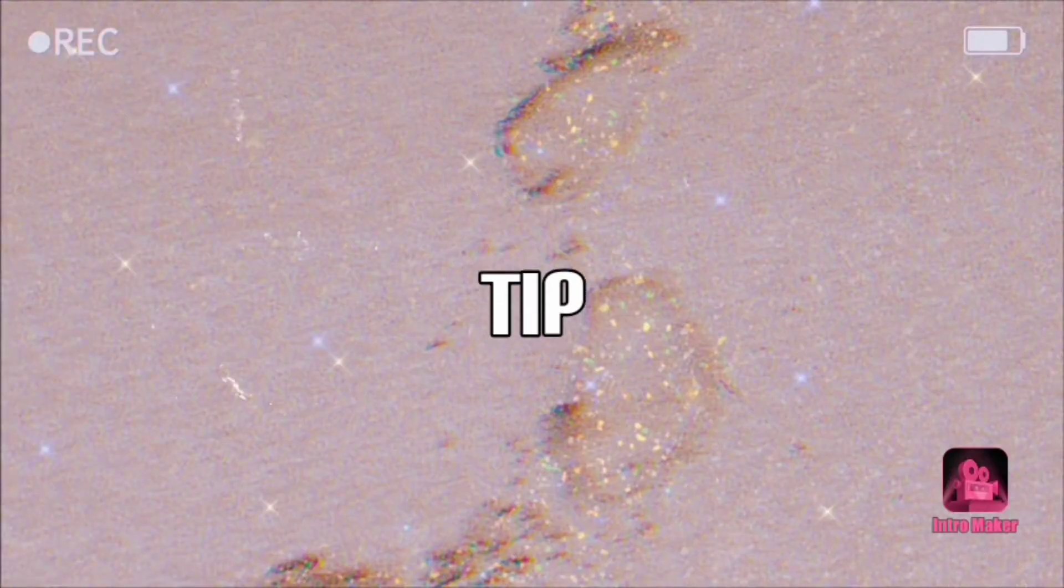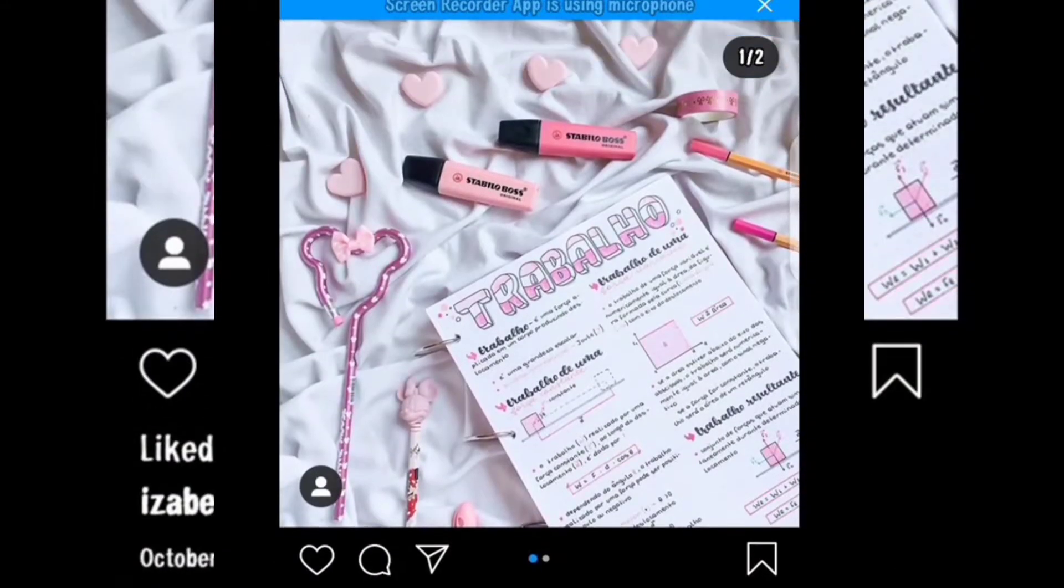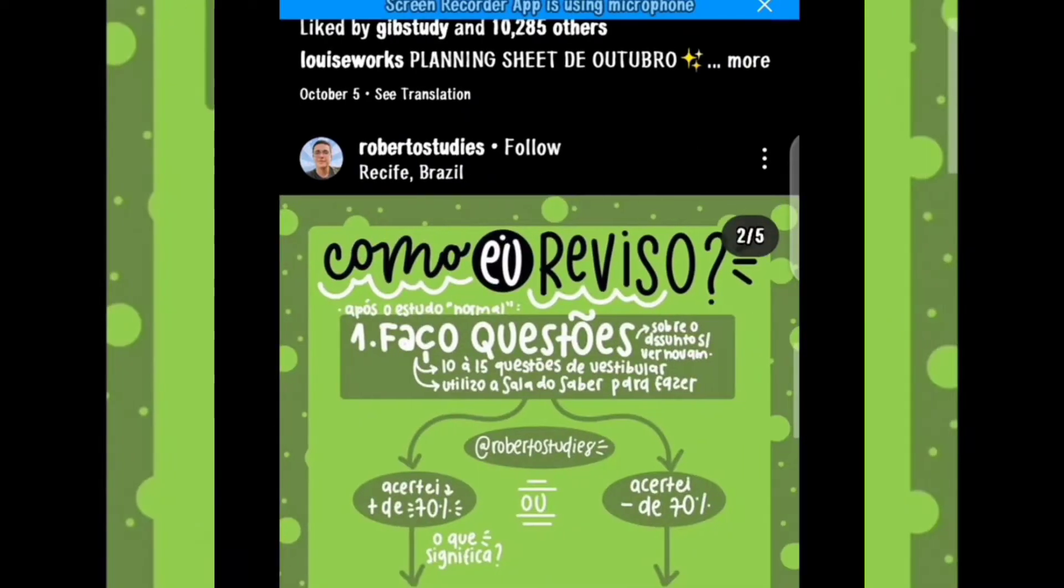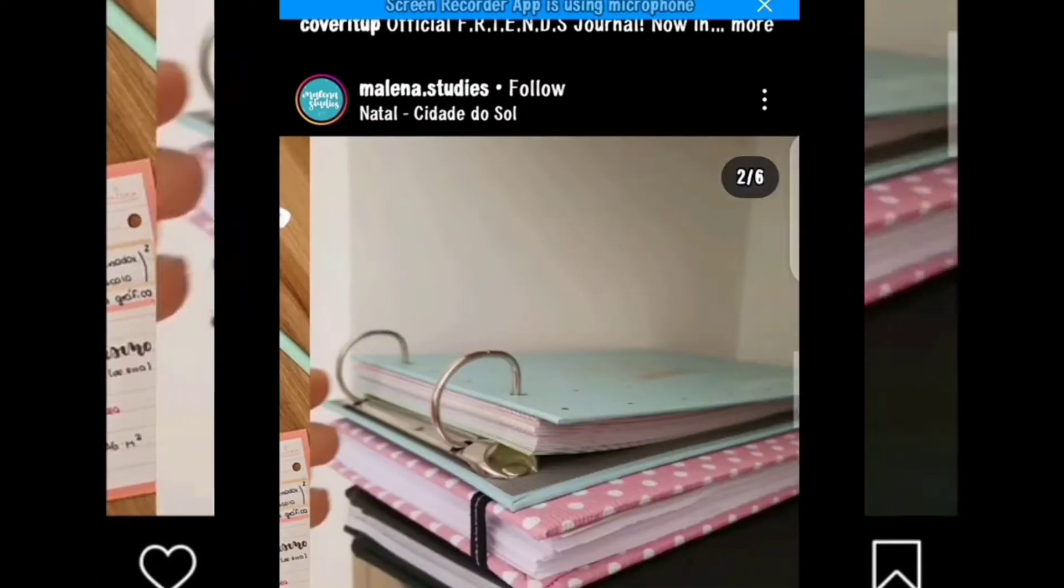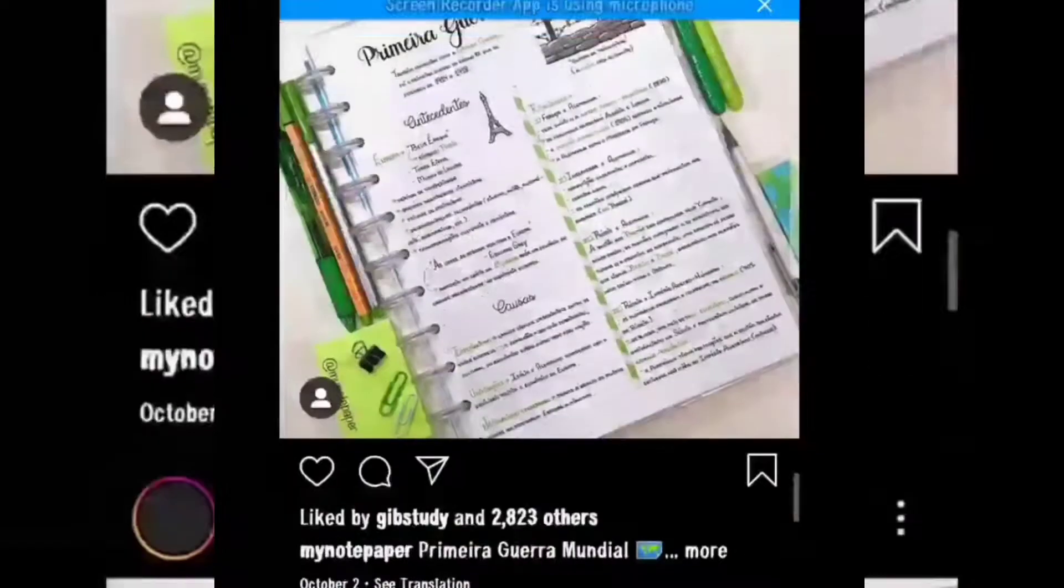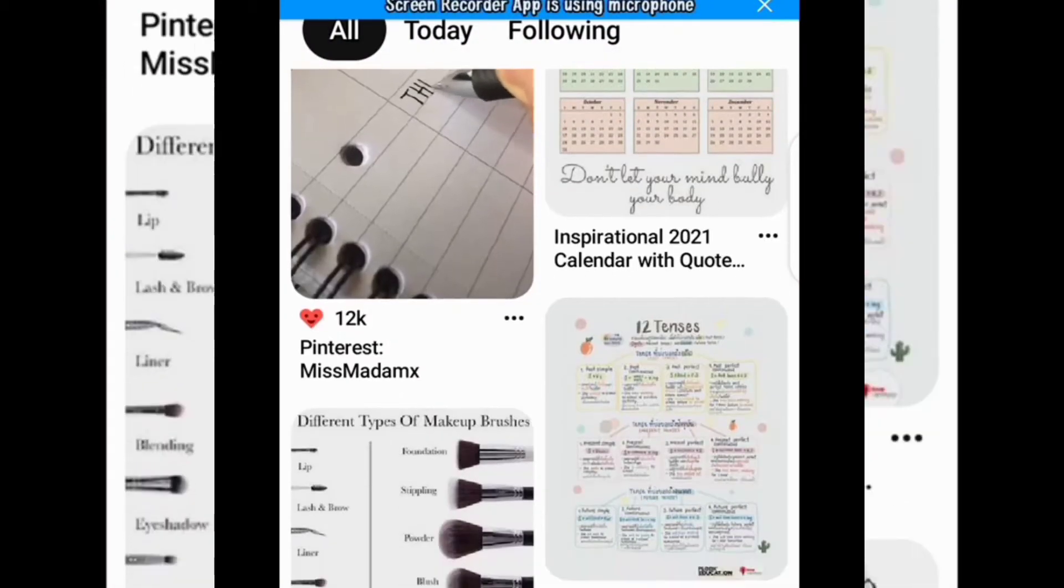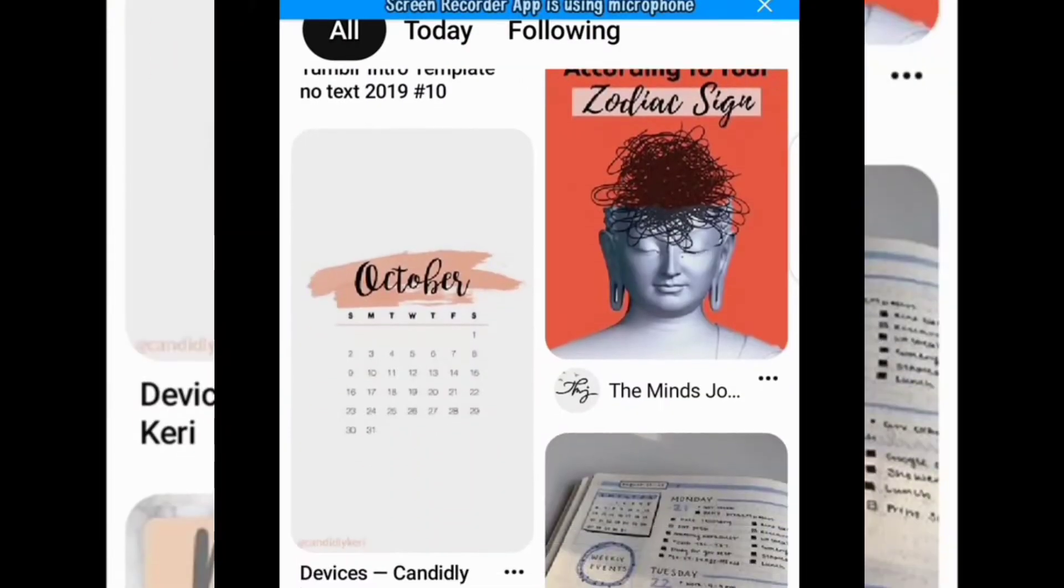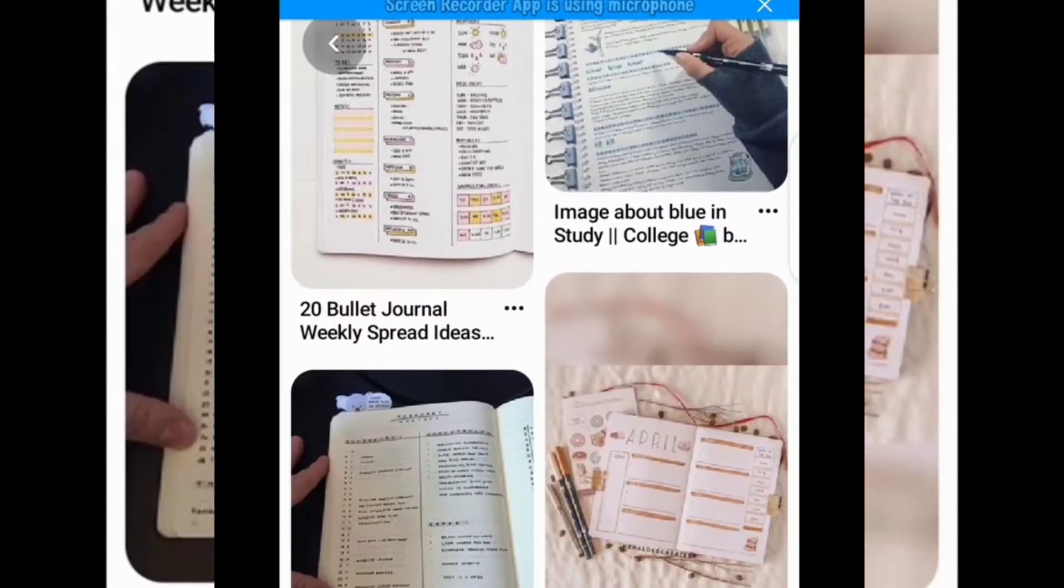Tip number one, discover your writing style. By this I mean before improving your handwriting, it's important for you to discover your writing style or which writing style you prefer the most, and you can take inspiration from Instagram and also from Pinterest. It has several writing designs or several sources of inspiration for you so that it is very clear in your head which writing you want to achieve.